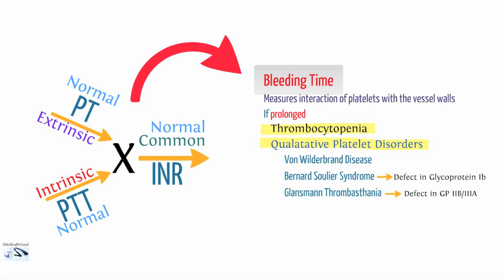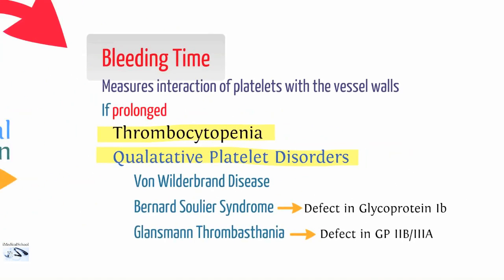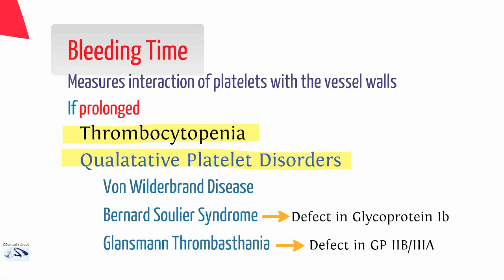If the bleeding time is prolonged, you have to think of thrombocytopenia first — your initial platelet count would already indicate that. Otherwise, you could have qualitative platelet disorders, meaning dysfunctions within the platelets. Examples include von Willebrand disease, which is one of the most common genetic causes of bleeding disorders; Bernard-Soulier syndrome, a defect in glycoprotein Ib on the platelet; and Glanzmann thrombasthenia, a defect in glycoprotein IIb/IIIa. These qualitative or quantitative platelet issues cause normal coags with bleeding and an increased bleeding time.